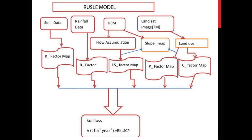This is the general model of RUSLE — it's not very complicated to grasp. At the top, the input data includes soil data, from which we derive the K factor map; rainfall data, from which we derive the R factor map; and a digital elevation model, which is mostly used to derive the LS factor, but also sometimes used to derive the P factor, the conservation practice factor. Landsat images — or Sentinel or other satellite imagery — are also used.